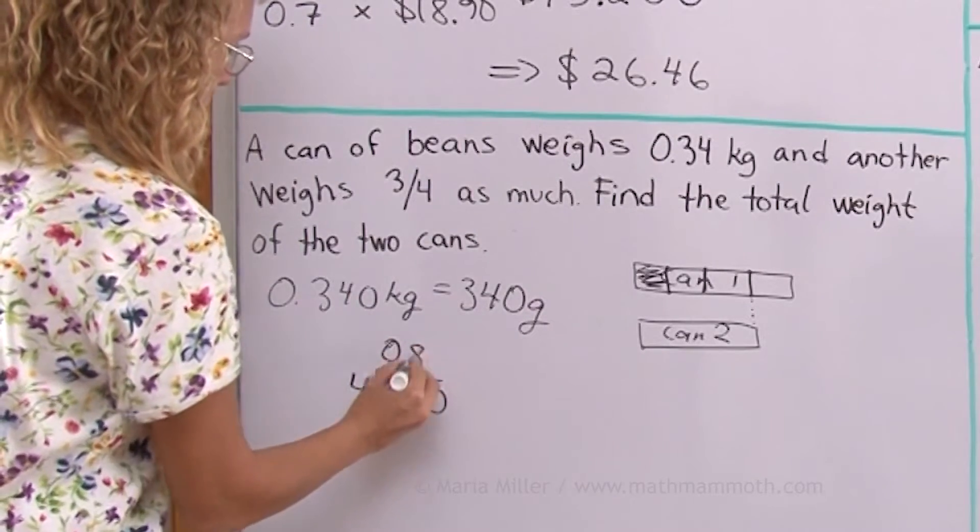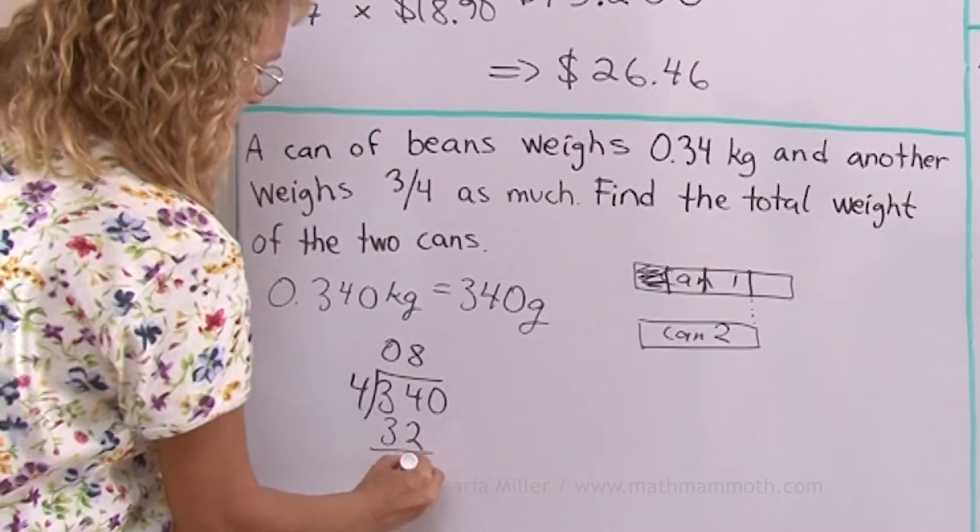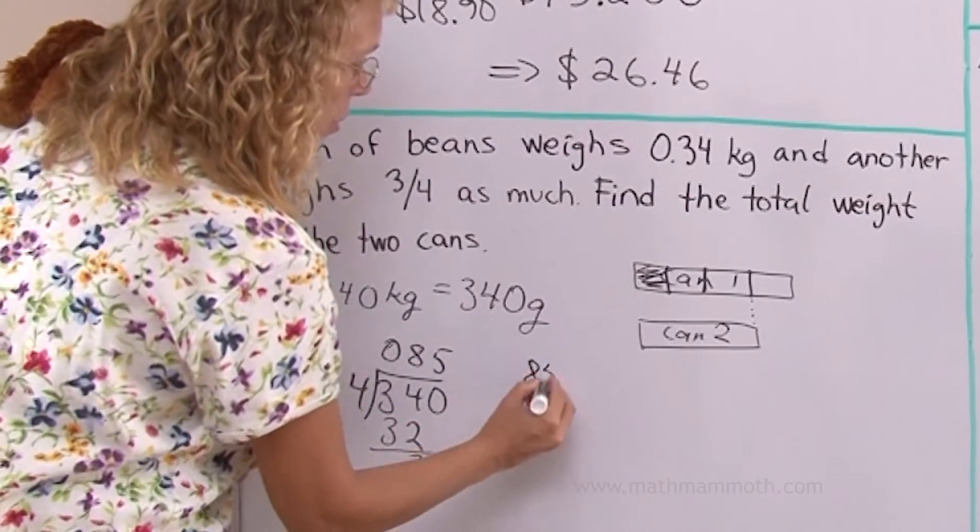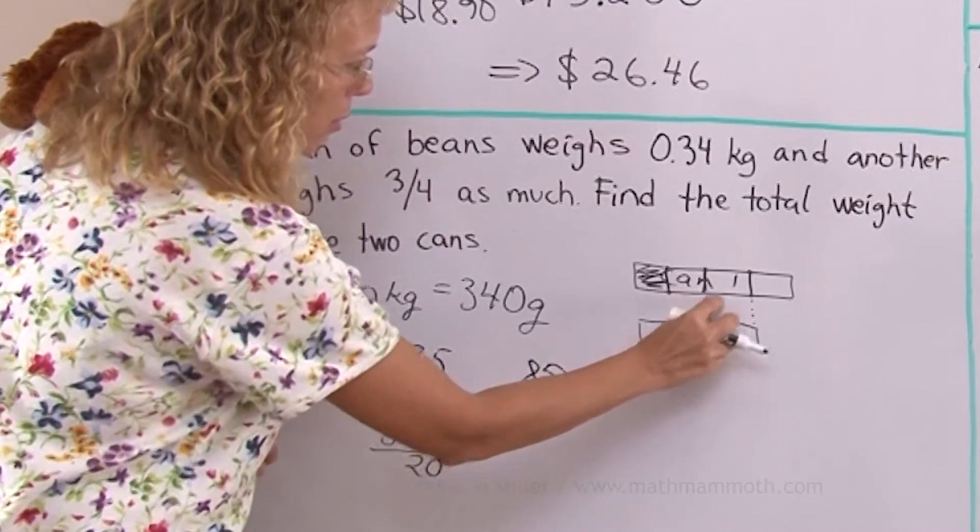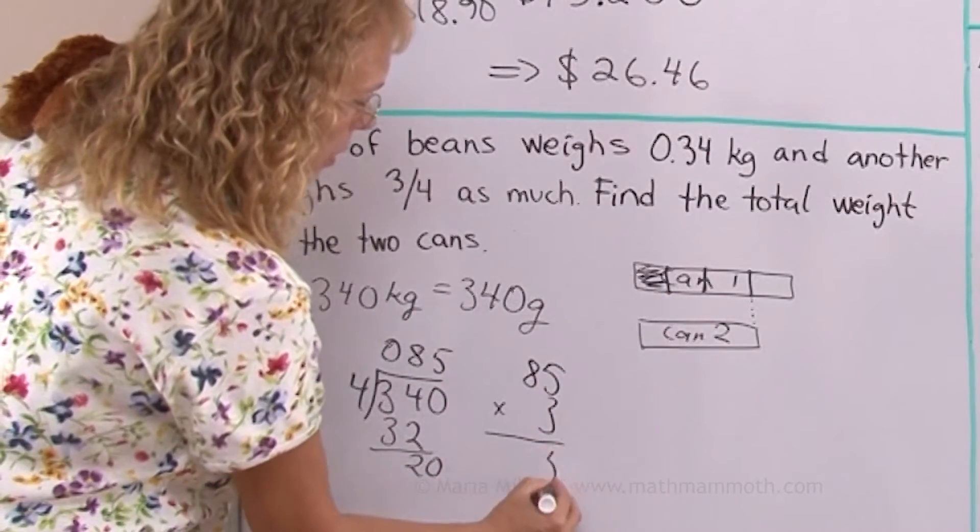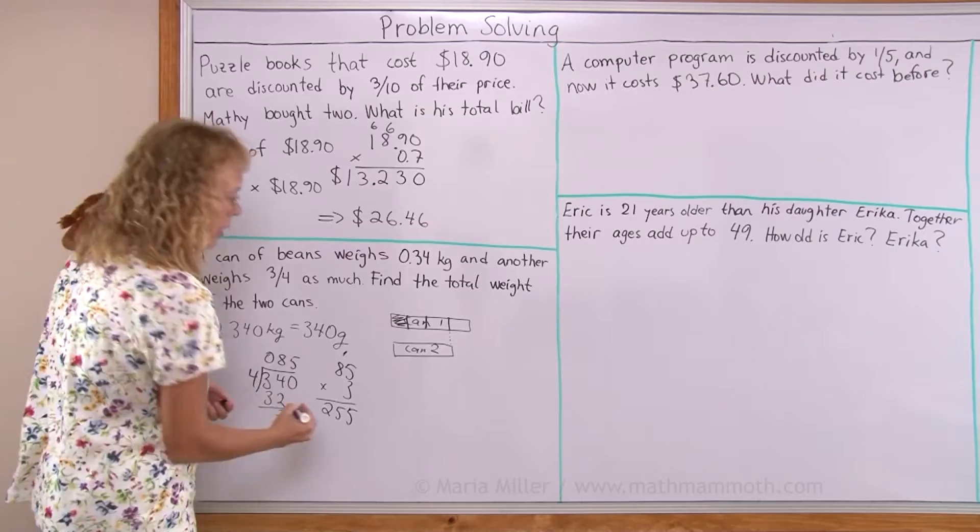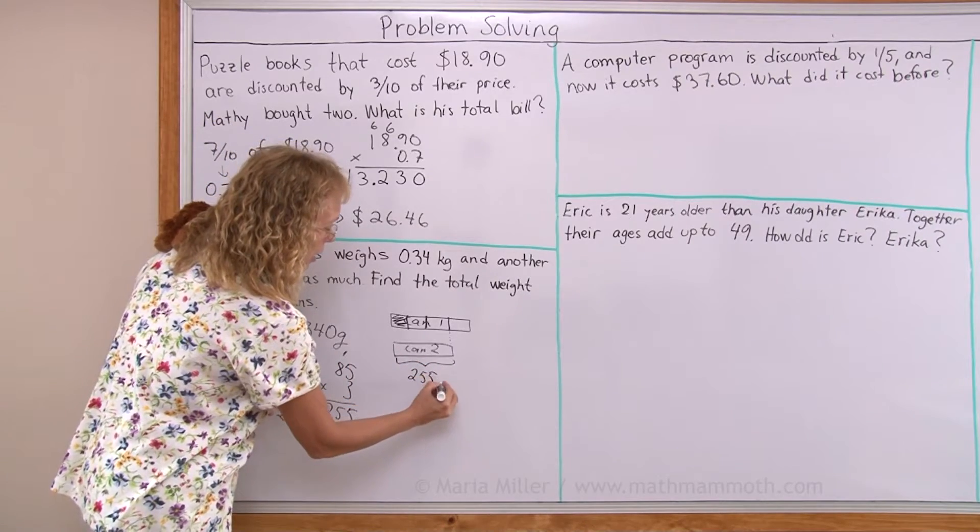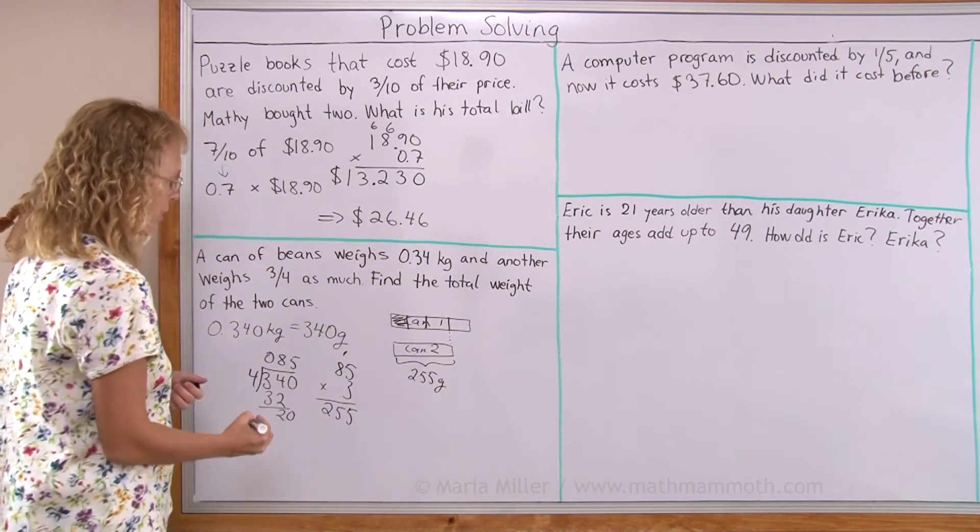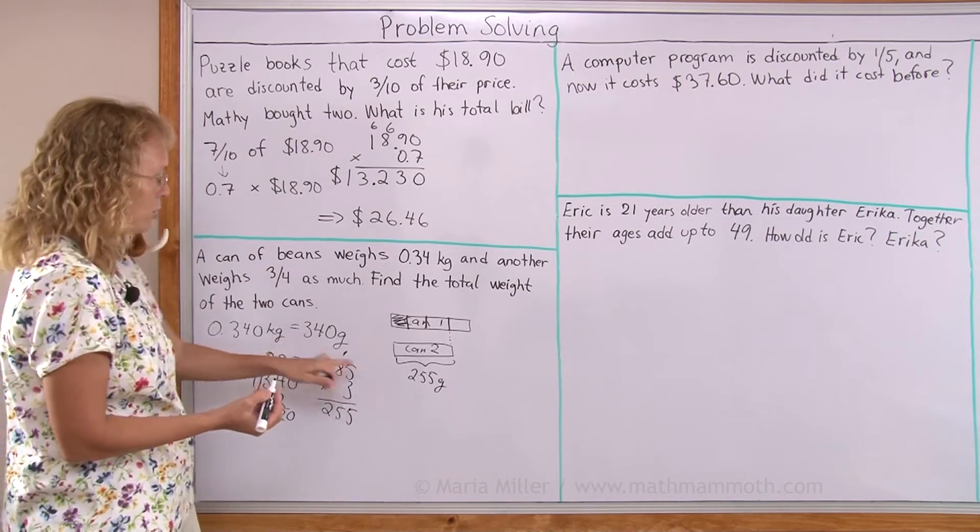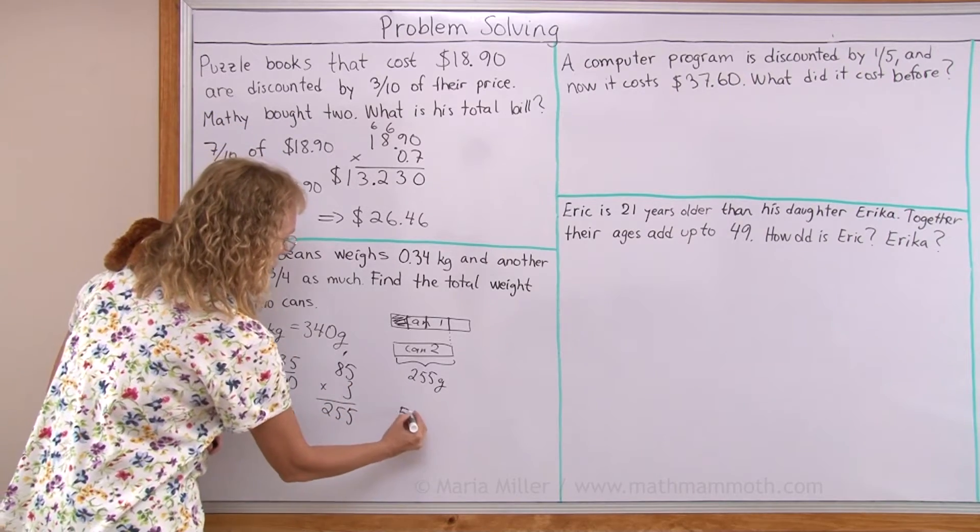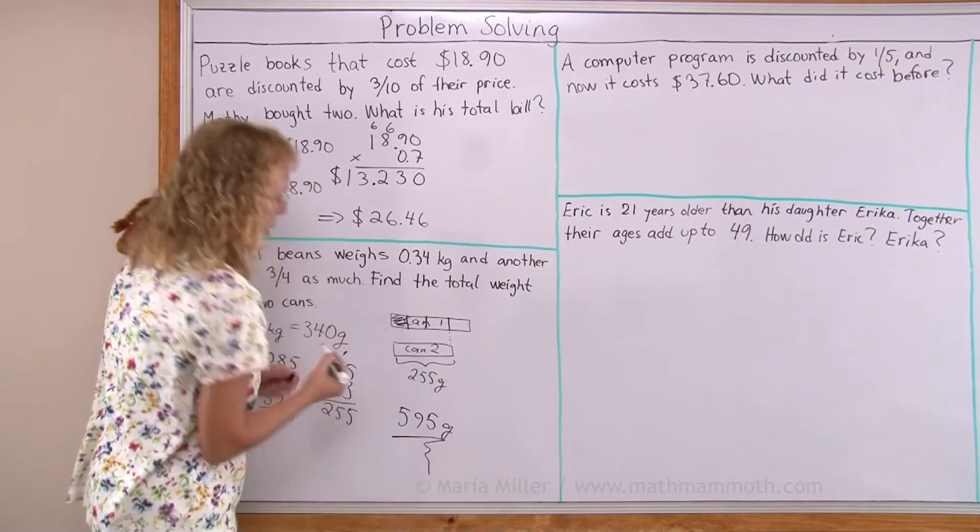Here we have 8 times 4, 32 and then 5, 85 grams. And then that times 3 to get these three blocks here. 15 and then 25. So can 2 is 255 grams. Find the weights together, you just add these two numbers then and there's no carrying even so it's going to be 595 grams.